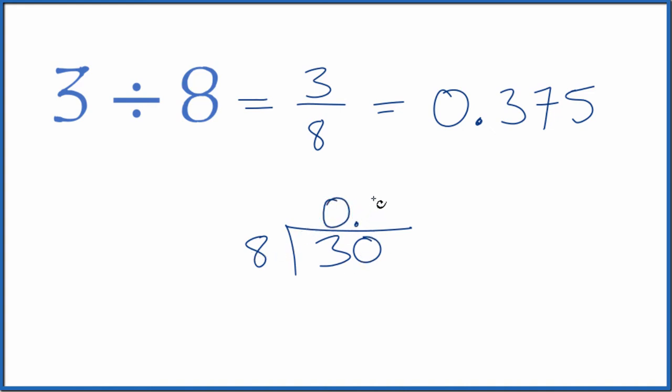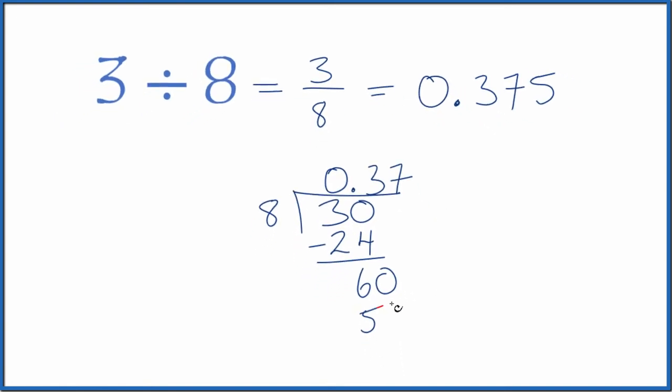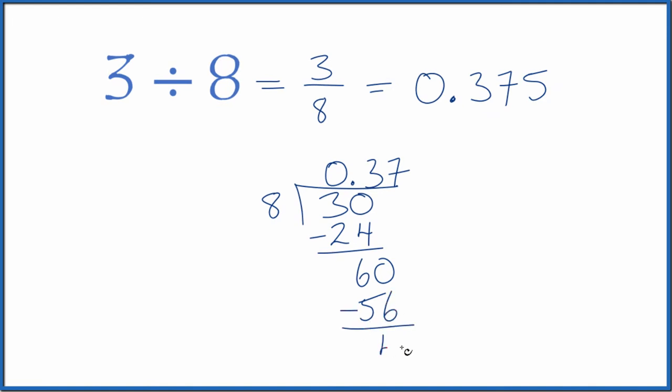8 times 3, that's 24. We subtract, we get 6. So let's call this 60 and we'll move over 1. 7 times 8 is 56. We subtract, we get 4.